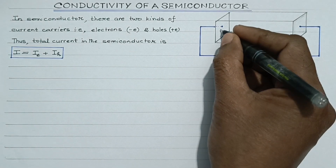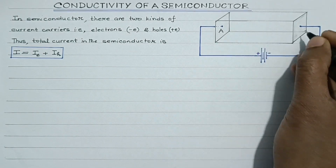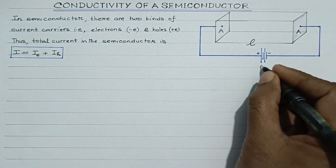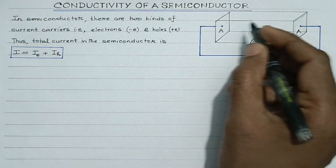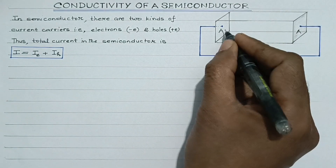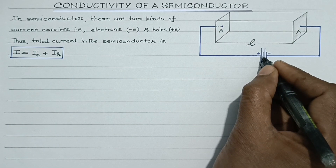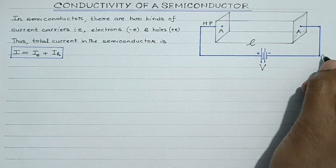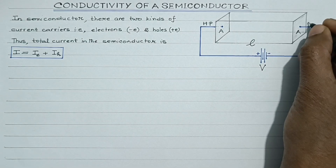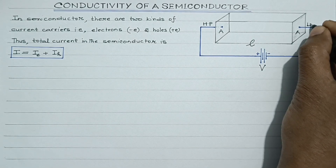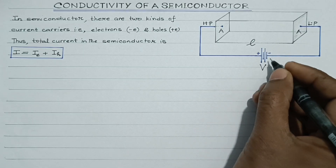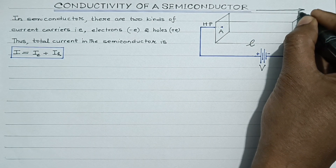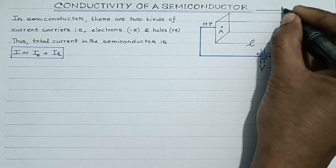Suppose there is a semiconducting block aur iska jo cross-section area, wo A maan lete hain. And suppose the length of this block is L, and V be the potential difference applied across the ends of the semiconducting block. Toh, yeh wala jo end hoga, it is connected to the positive terminal, so this end of the block will be at higher potential. And this end is connected to the negative terminal of the battery, so this end will be at lower potential. Toh, is potential difference ki vajah se jo electric field established hoga, iski direction hamesha from higher potential to lower potential hoti hai — so this is the direction of the electric field.